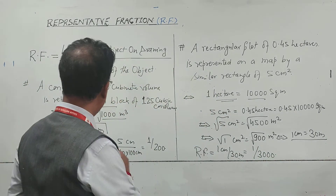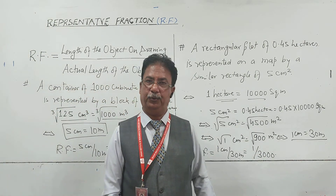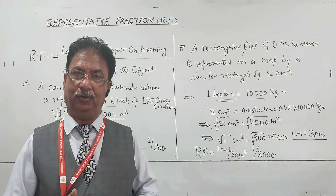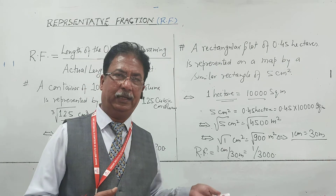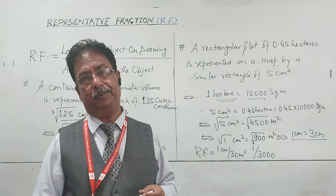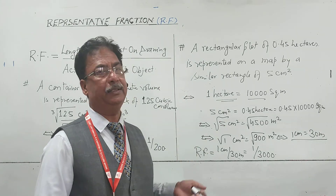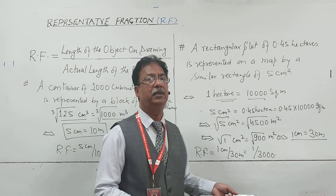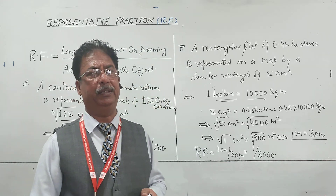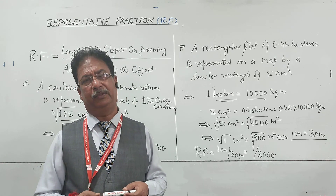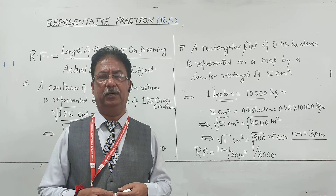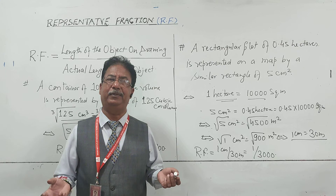I hope you understand these different types of RF. When we solve problems on plain scale and diagonal scale, you can easily find the RF in the proper way. Right now I have taken different types of RF and most come in whole numbers, but if there is a decimal part, don't use decimals — use proportions instead. It is not necessarily always 1 to 3000; RF can also come as 3 by 200 or 3 by 100. RF is just a proportion. If RF is 3 by 100, it means 100 is the actual length and we are representing it by 3.